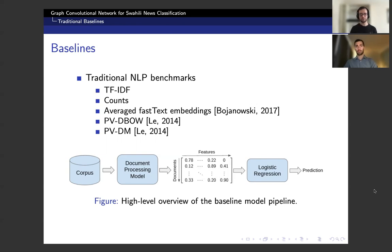The document preprocessing stage can be any particular model or heuristic, but we're looking at using five traditional NLP benchmarks. The first is the TF-IDF model, which is a normalized version of the counts model, our second option. We also look at using averaged fastText embeddings, which are pre-trained. The last two are two variants of the popular doc-to-vector model: the paragraph vector distributed bag of words training regime and the paragraph vector distributed memory technique.